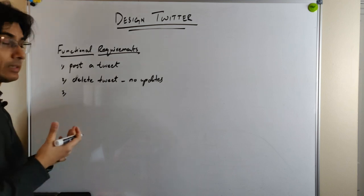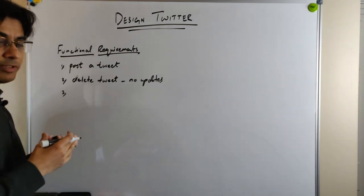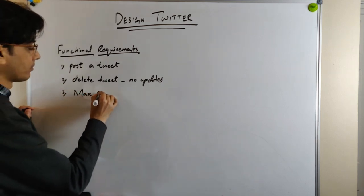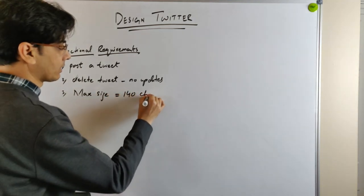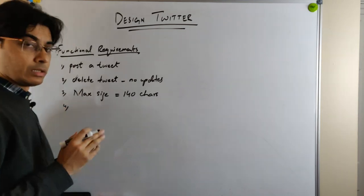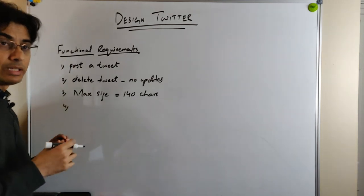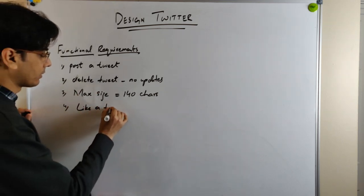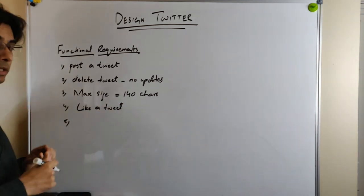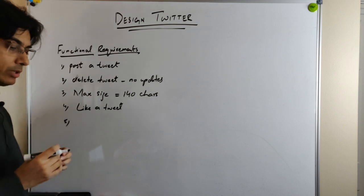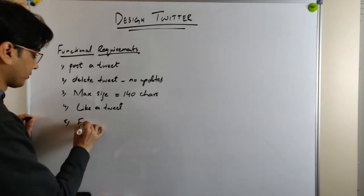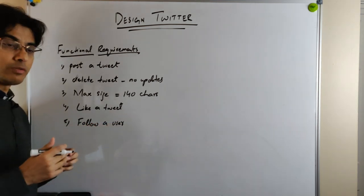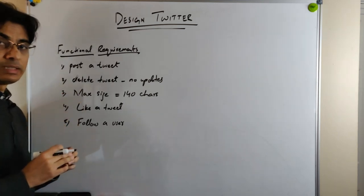The third functional requirement is that the maximum size of a tweet is 140 characters. The fourth functional requirement is the user should be able to like a tweet. The fifth requirement is the user should be able to follow another user. When user A is following user B, he can see all the posts from user B on his home timeline.